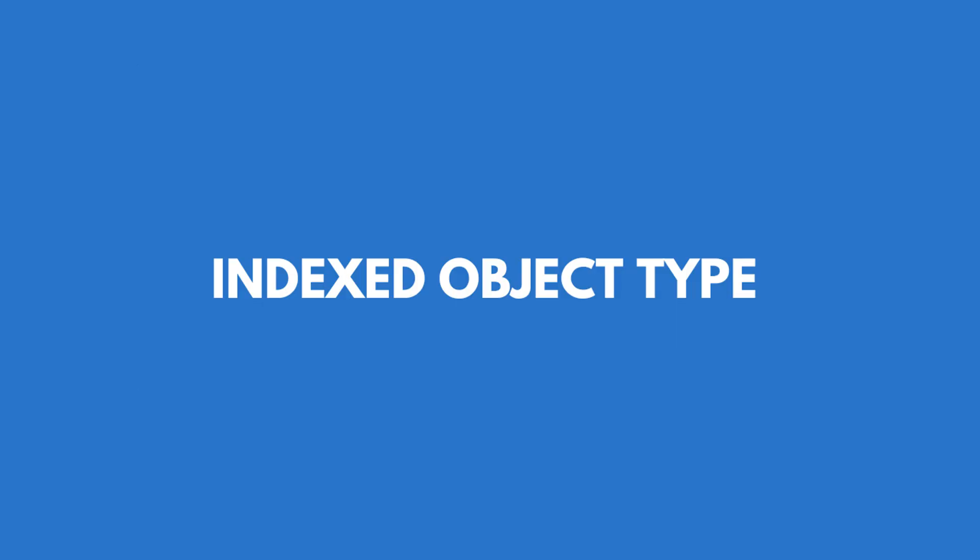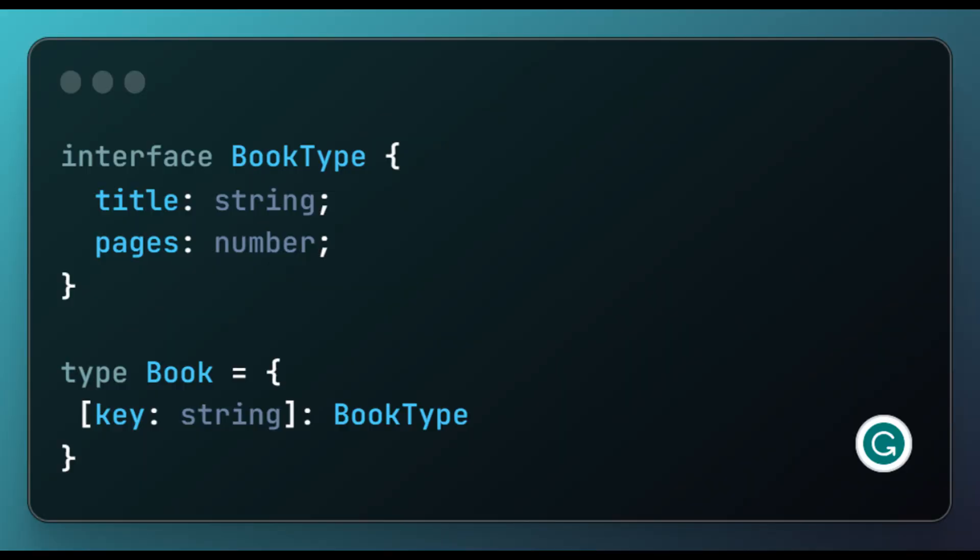Let's look at how to create a typesafe dictionary in TypeScript using the indexed object type. Suppose we want to create a dictionary type to store a list of books using the indexed object type. Our dictionary is going to look like this.